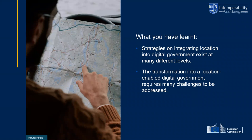In this final chapter, we focused on strategies on integrating location into digital government and showed that these strategies exist at many different levels. We provided a set of examples to show what we mean by these strategies and what are the key elements considered in them. We also wanted to show that there are many different challenges that need to be addressed when we really want to make a transformation toward the location-enabled digital government. Some of these challenges have been explained throughout this course; others require new courses and new research to better understand and address them.